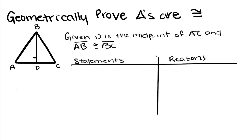If you remember, there are a bunch of different ways to prove triangles are congruent. There's side-side-side, side-angle-side, angle-side-angle, and HL. Those are the kinds of things we're going to use to prove that these triangles are congruent.